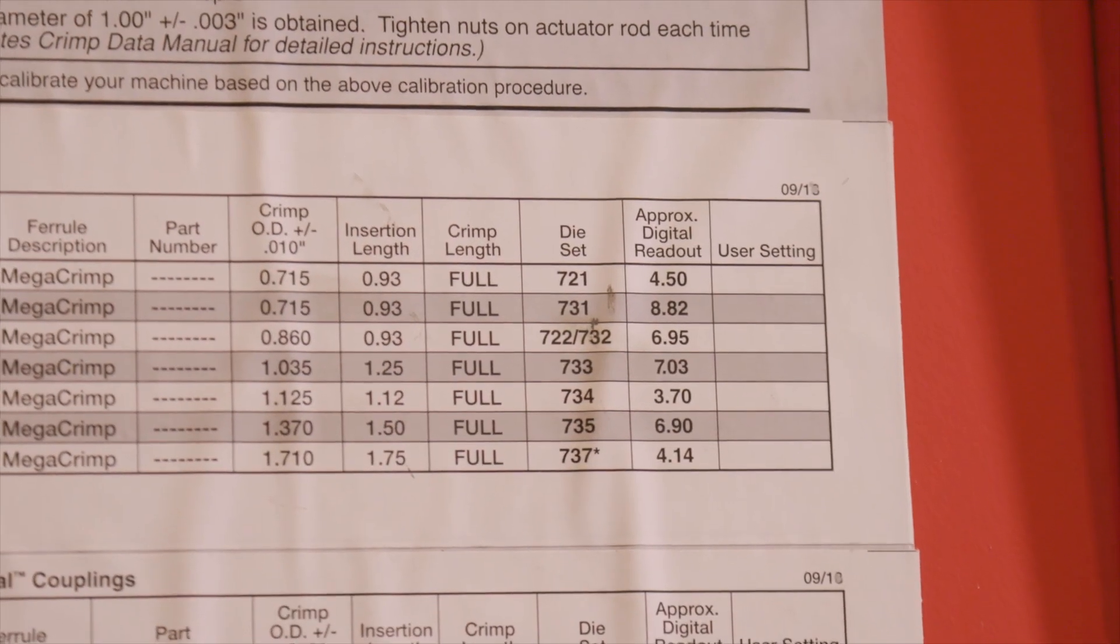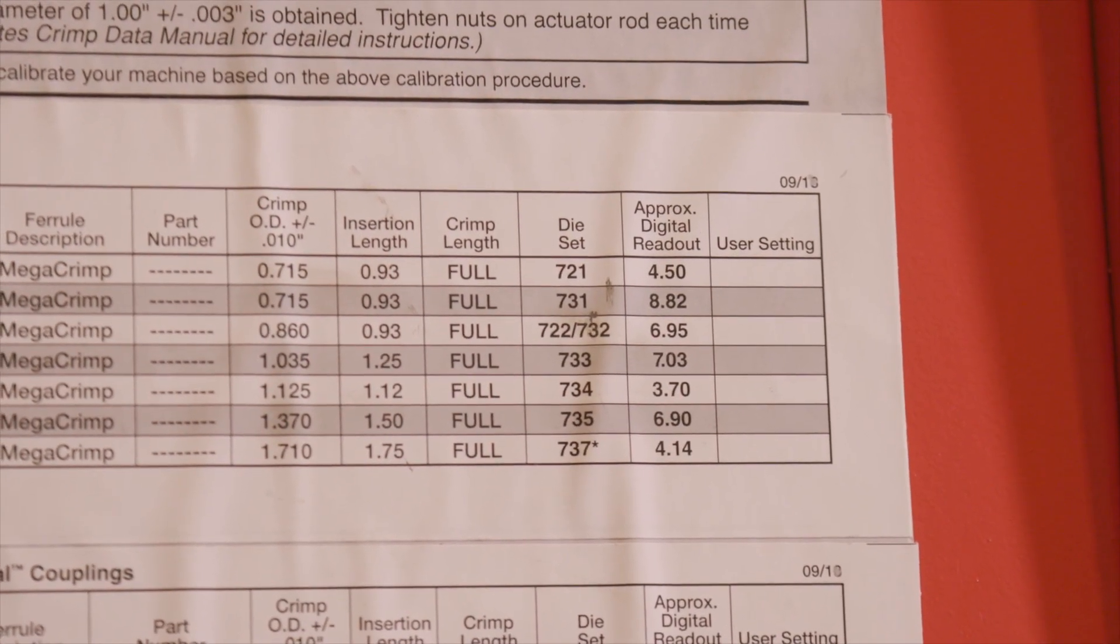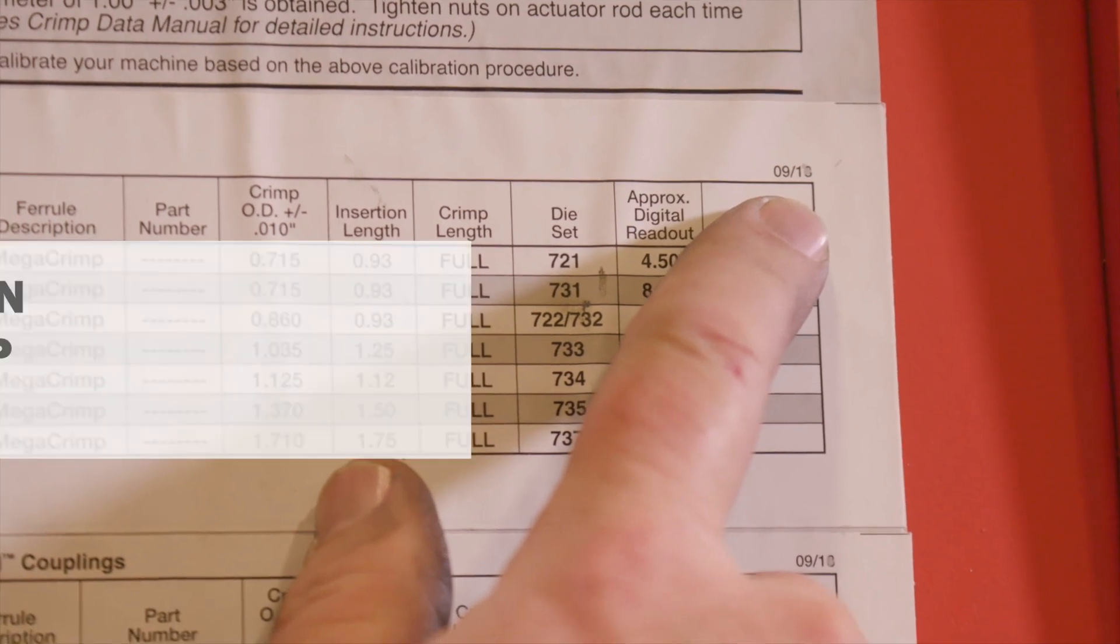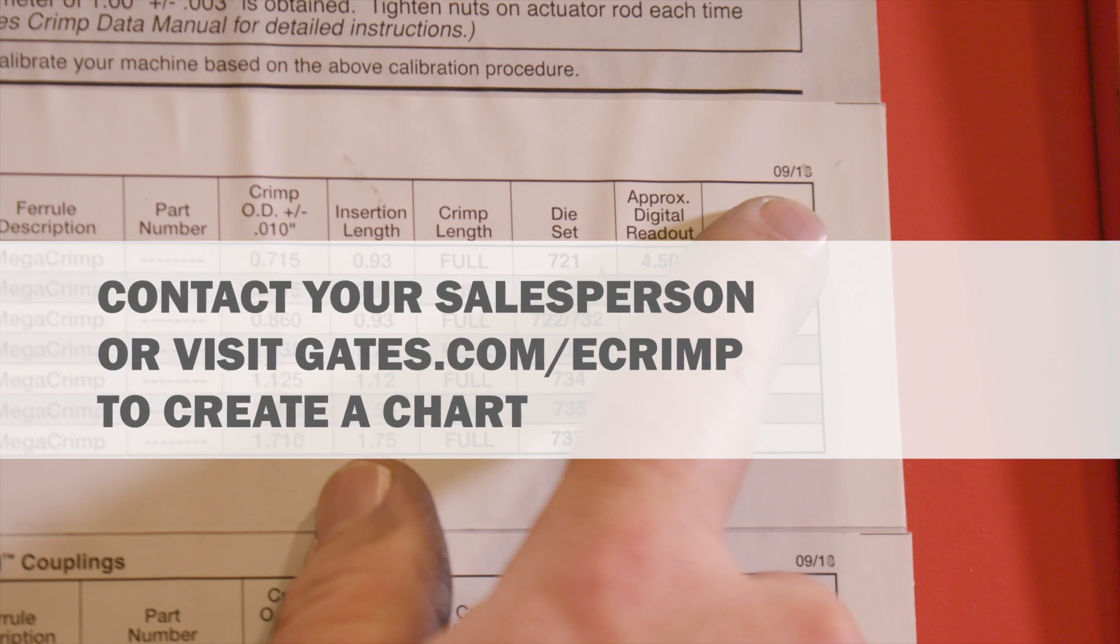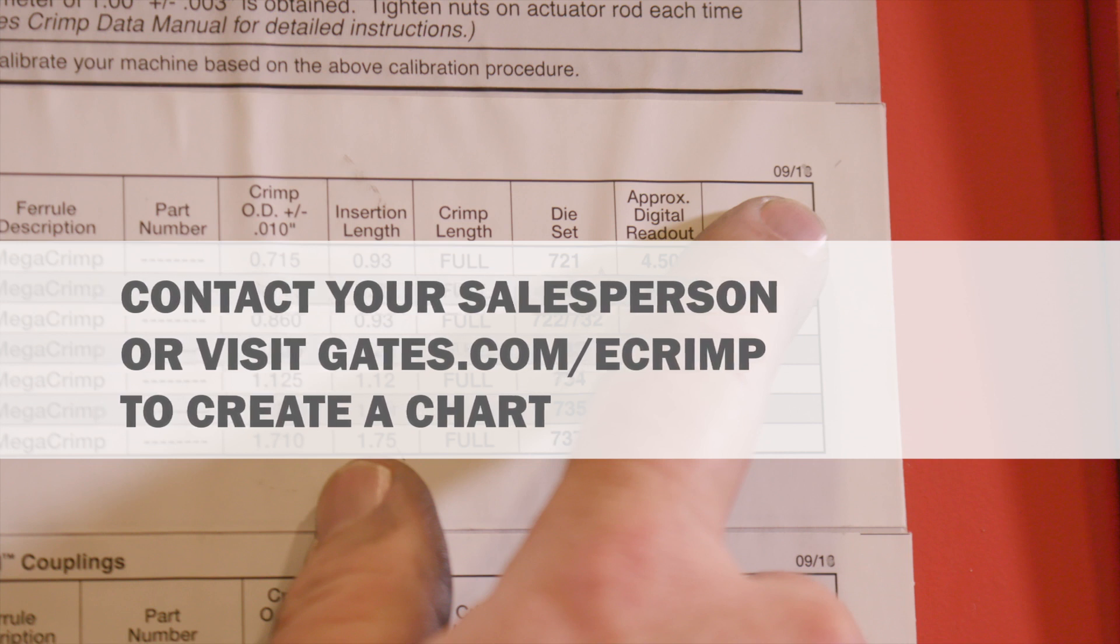This is a good time to check that the crimp decals are up to date. If not, contact your local salesperson for the latest version or go to gates.com/ecrimp to create, download, and print a custom chart.